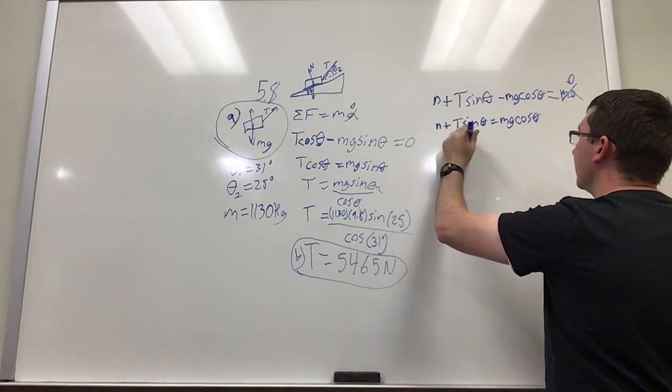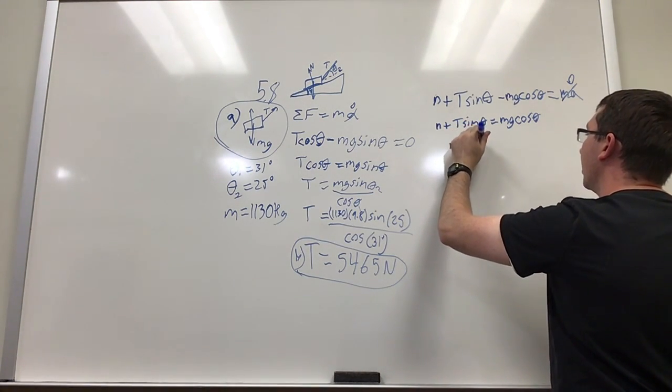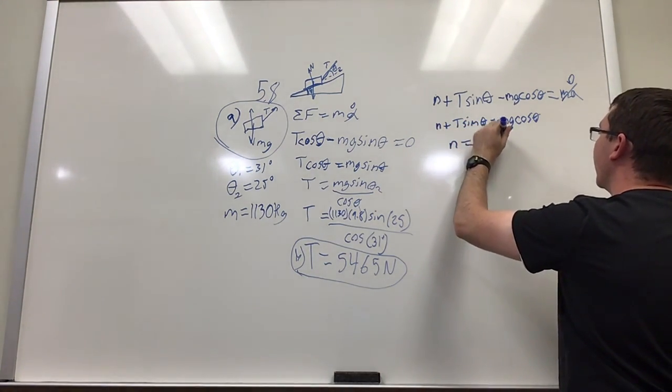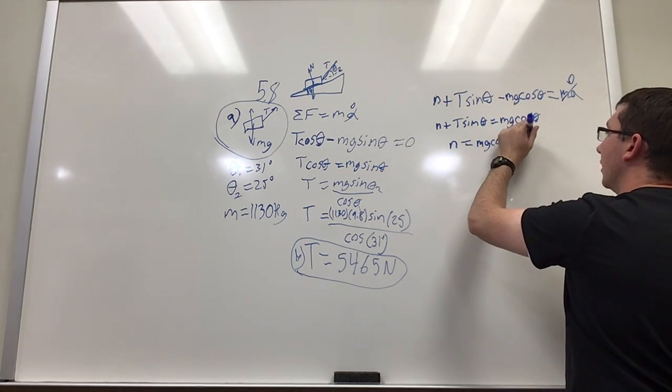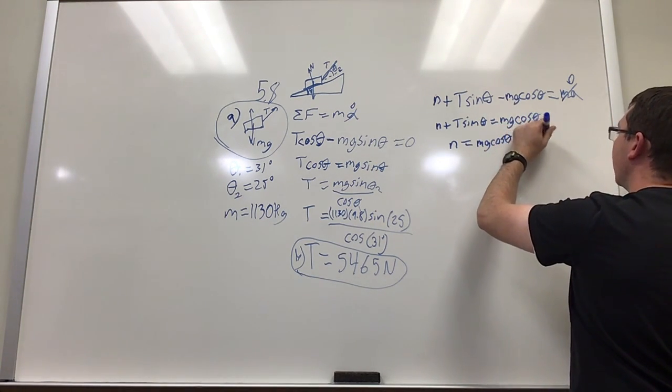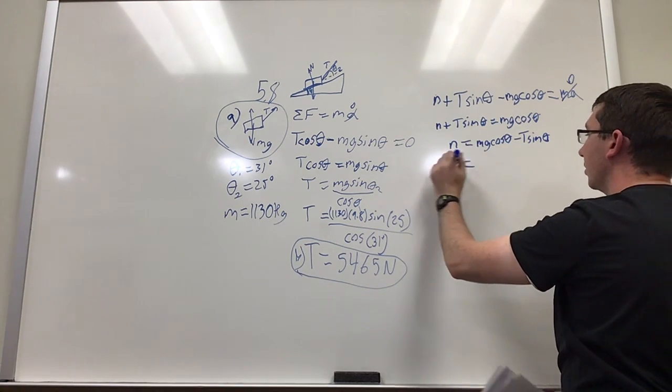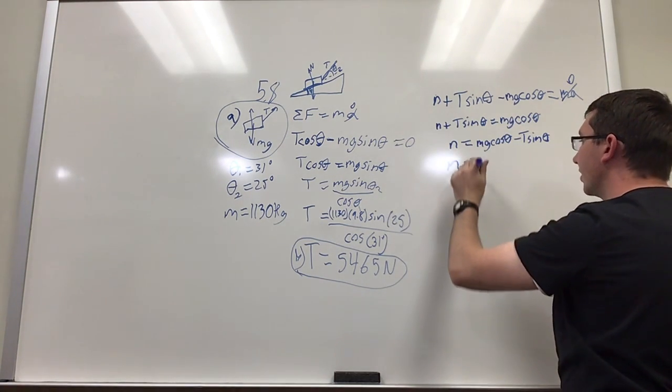So n is going to be equal to mass times gravity times cosine of the angle minus tension times the sine of the other angle, and when you plug the numbers in for that...